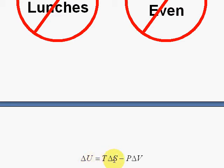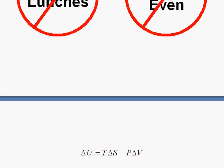Delta U equals TDS minus P delta V. All good variables, well defined for the system at any final initial point.